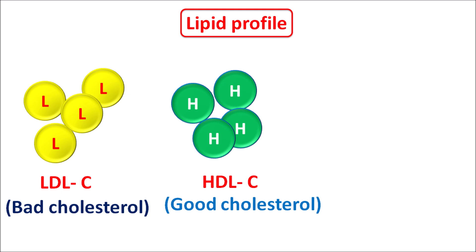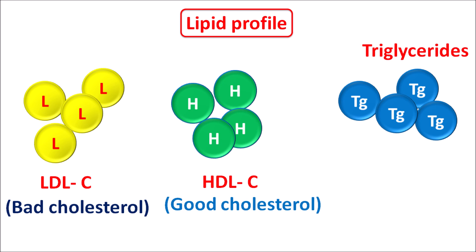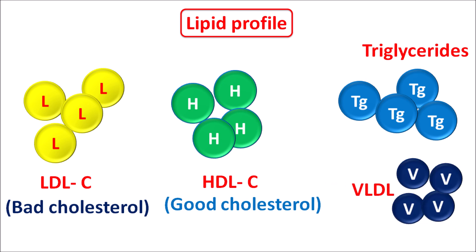Apart from the cholesterol levels, the lipids within the body also include triglycerides. The serum triglyceride levels are going to be checked in the lipid panel. These triglycerides can be transported in the form of VLDL, very low density lipoproteins. VLDL is the main transporter of triglycerides. The serum triglycerides can also add to the total cholesterol level by 20%. That's why in patients with high triglyceride levels, the total cholesterol levels are also increased, because the triglycerides share 20% of the total cholesterol content.